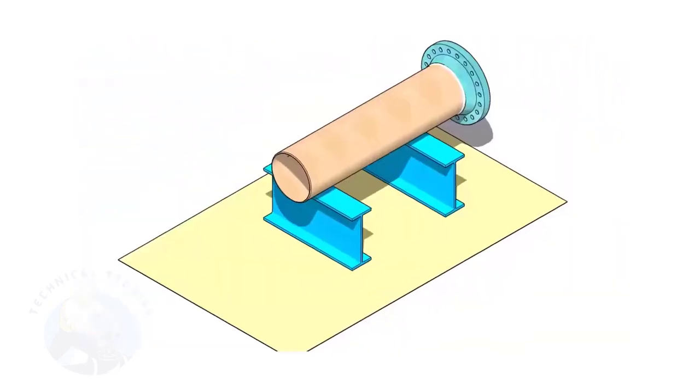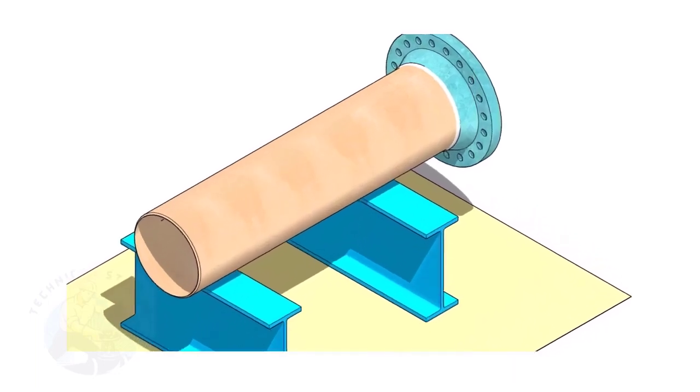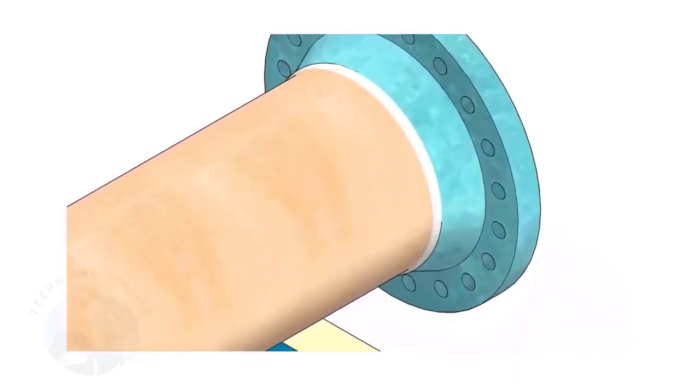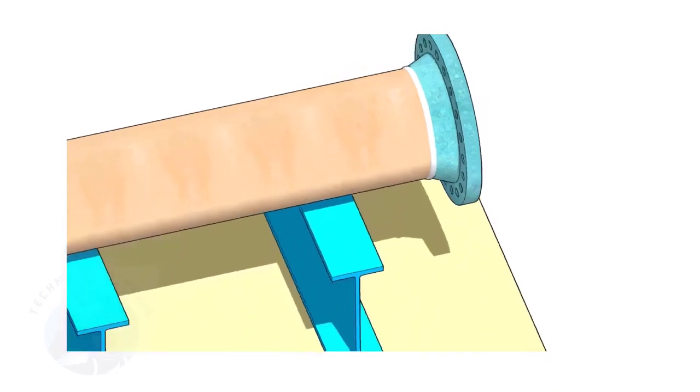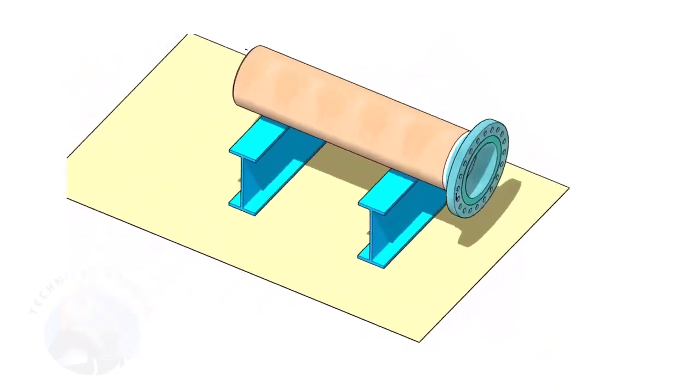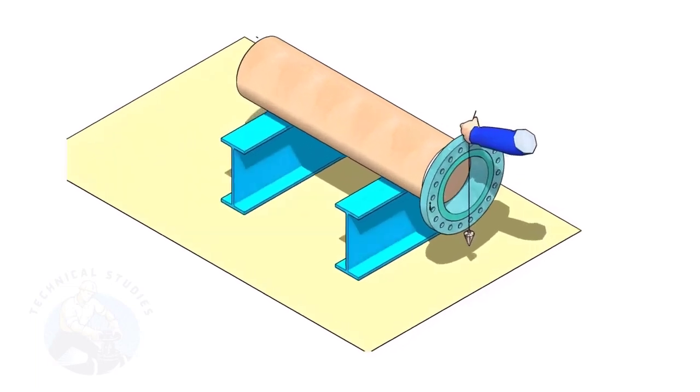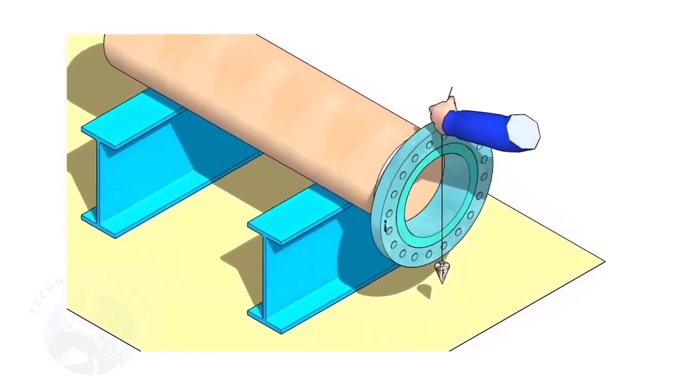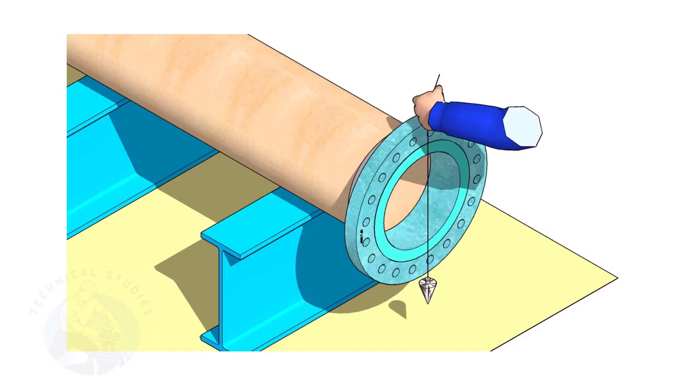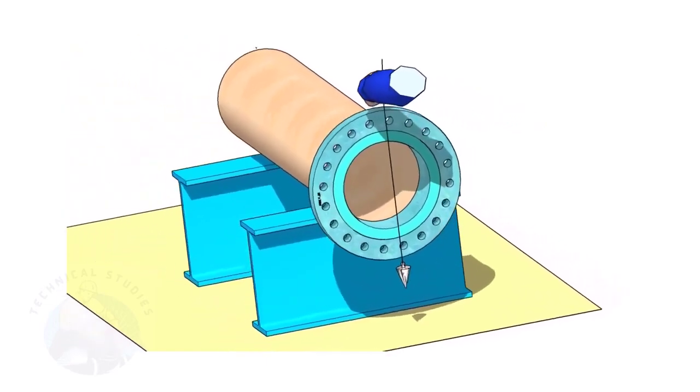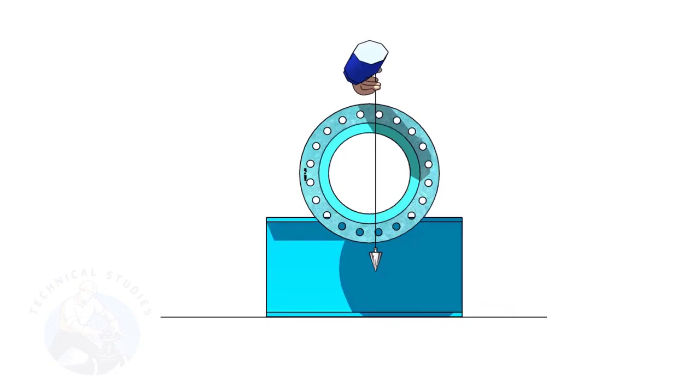Assume that the flange is welded to the pipe. Put the spool on suitable supports. Correct the plumbness of the flange. Choose a set of holes closer to the center of the flange. This will ensure more accuracy.